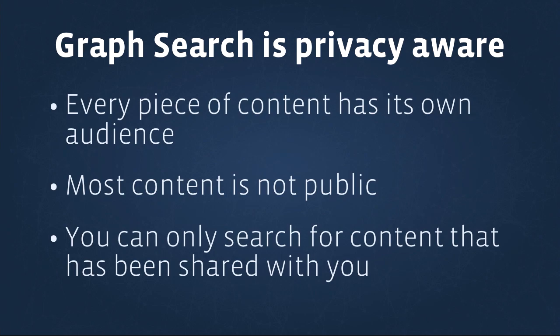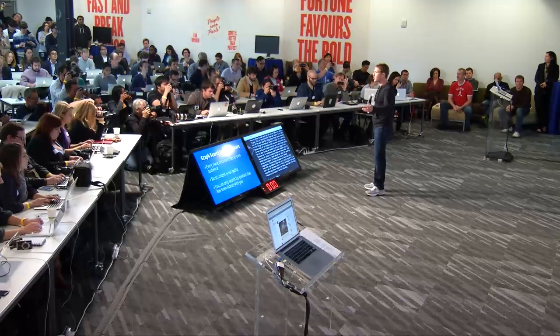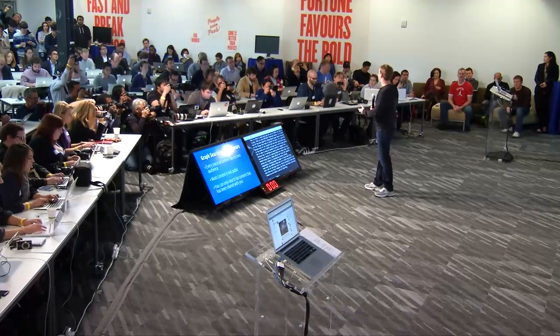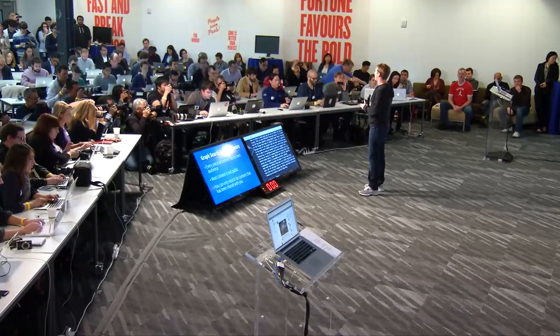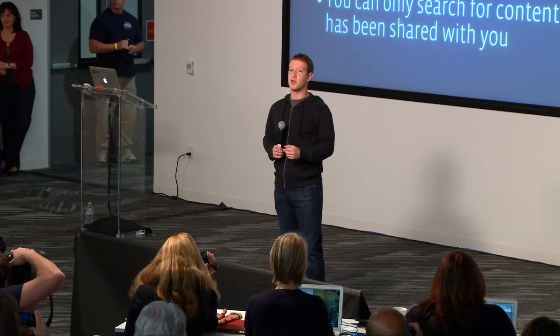The search that we wanted to build is privacy-aware. Every piece of content on Facebook has a different audience that can see it. This is both one of the most powerful things about Graph Search and one of the things that made it most difficult to build. On Facebook, most of the things that people share with you aren't public, and similarly most of the interesting content you have access to isn't public. So you want a search tool that helps you get access to things that people have just shared with you.